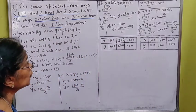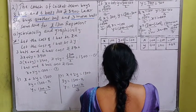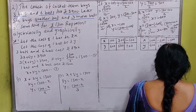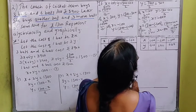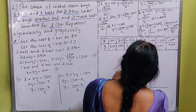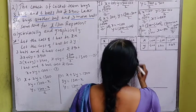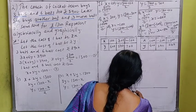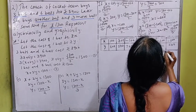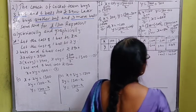Now we draw the graph. The x-axis extends on both sides since x has negative values. The y-axis only needs positive values. Scale: 1 unit = ₹100 on both axes. On the x-axis, mark 100, 200, 300, 400 to the right and −100, −200, −300, −400, −500 to the left. On the y-axis, mark 100, 200, 300, 400, 500, 600, 700.